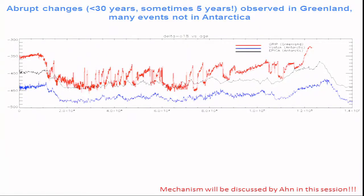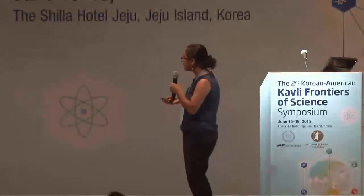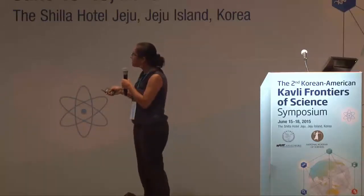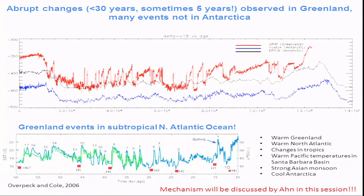Also shown are two different sets of ice cores from Antarctica — the black and blue records — and what's remarkable is that they don't show this same behavior. The mechanisms underlying this will be the focus of Ann's talk later in today's session. The abruptness of these events is not limited to Greenland. We see them in records of sea surface temperatures that go back through time, overlaying with the Greenland record and matching up nearly one to one. They're not just seen in the subtropical North Atlantic — we can see them in records from near Venezuela, records off of California, and even in records from right near here in Korea, such as records from southern and eastern China.